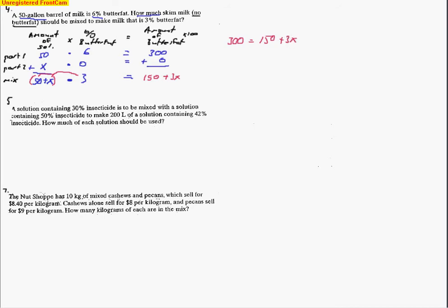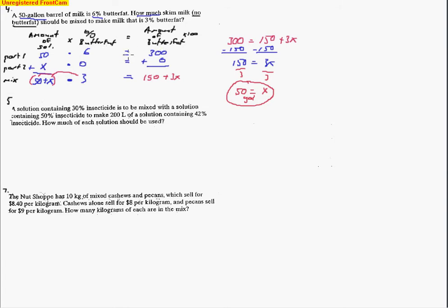To solve, I subtract 150 from both sides, giving 150 equals 3x. Dividing both sides by 3, I get x equals 50. So 50 gallons of skim milk needs to be added. Basically, we multiply the amount of solution by its percentage, add those results together, set it equal to the final mixture, and solve. That's the approach for all the problems.